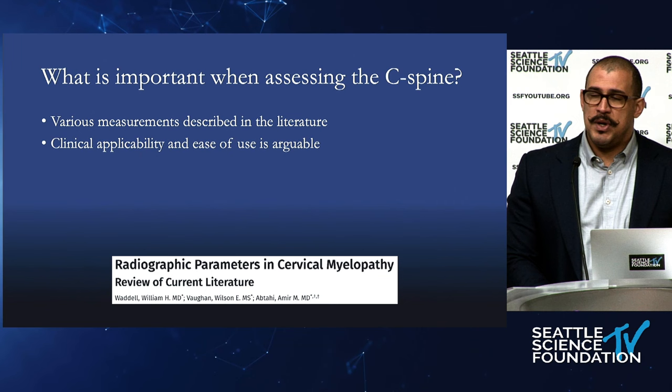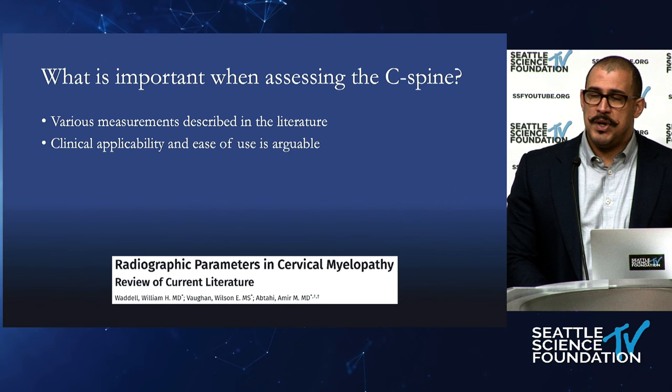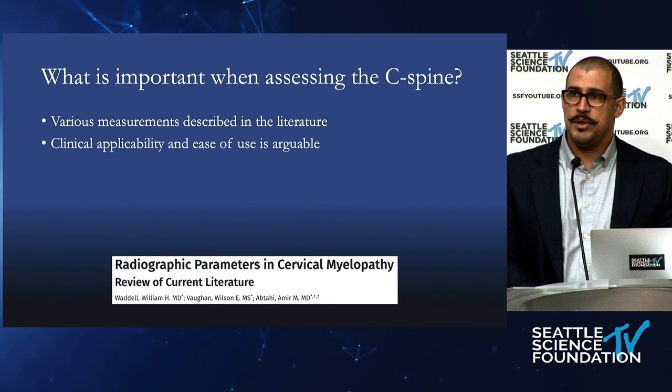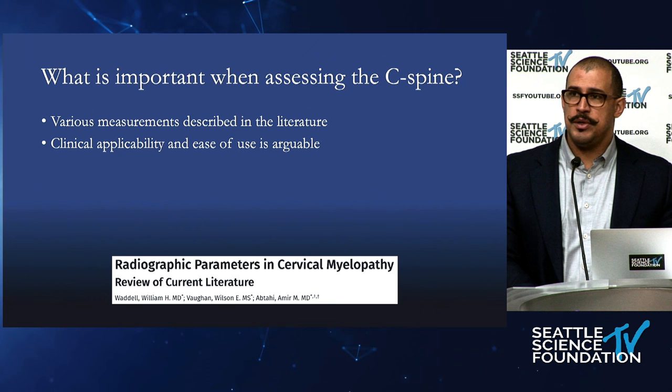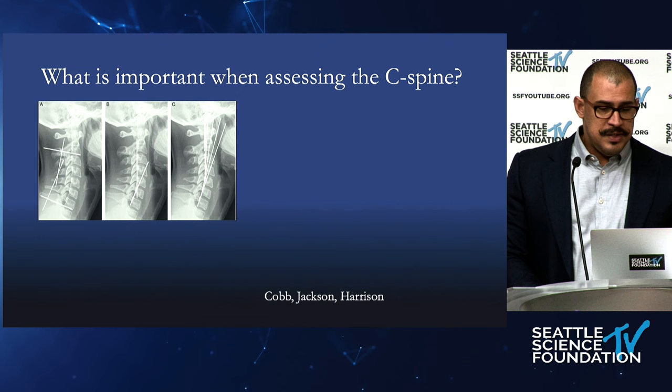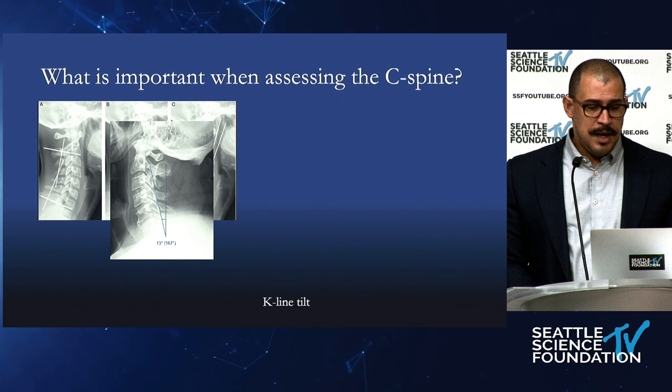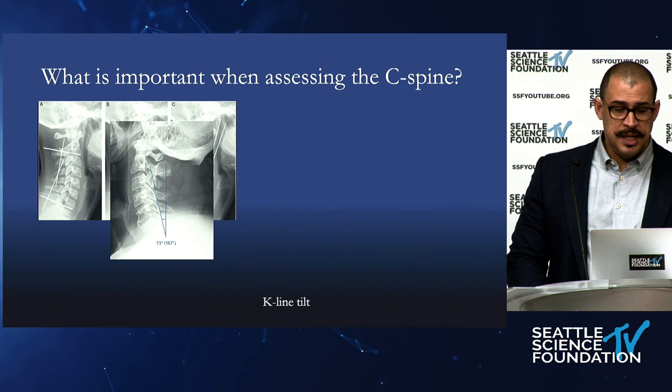When looking at the cervical spine, there are so many different parameters described in the literature, and some are more or less useful than others. How much time, how much fluency do you have measuring radiographs in the clinic to make it applicable to your preoperative assessment? These include Cobb, Jackson, and Harrison angles — which one do you actually want to use? Cobb angle is important. This is the K-line tilt, described in laminoplasty, looking at what's appropriate or inappropriate.